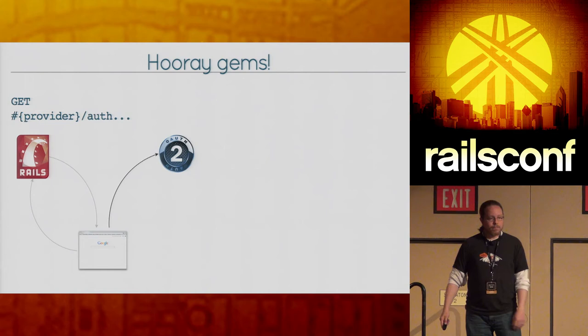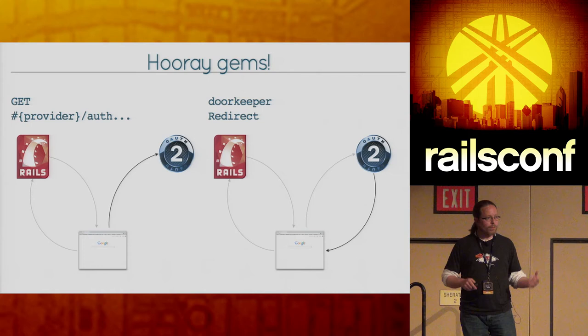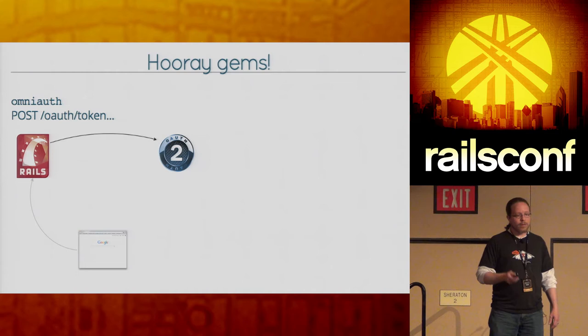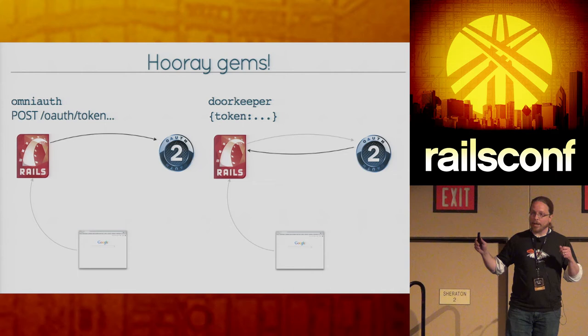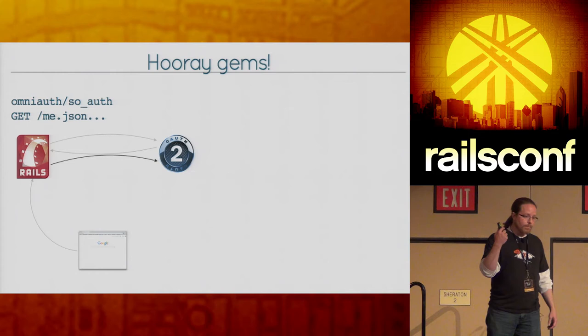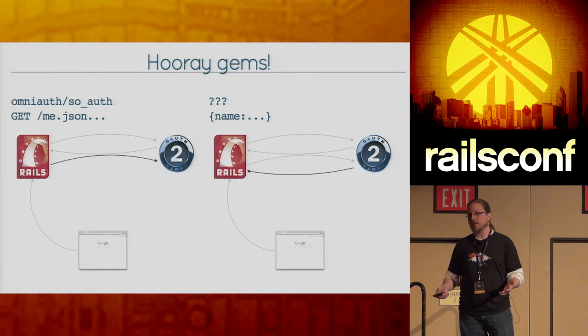The gems are getting us most of the way there already. The request for the authorization endpoint happens, and DoorKeeper handles doing the redirect back to the consumer app once it knows we have a valid user. The browser follows the redirect back to the consumer. OmniAuth handles posting to the provider to try to get a token, and DoorKeeper handles returning that token to the consumer. OmniAuth and SoAuth combined, based on the strategy, then send a GET request to get more information about the user. At this point we need to return some information.